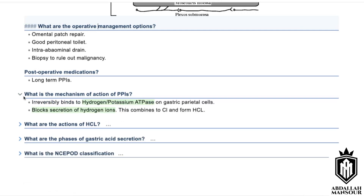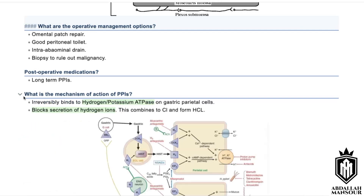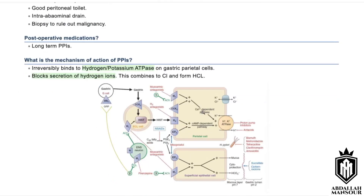To be more precise, PPIs irreversibly bind to the hydrogen-potassium ATPase in the parietal cells, which prevents secretion of hydrogen and makes the gastric area less acidic.